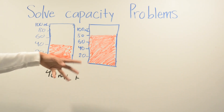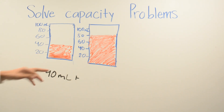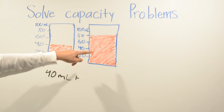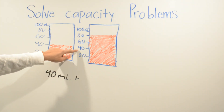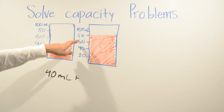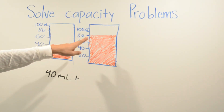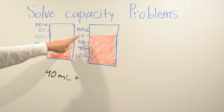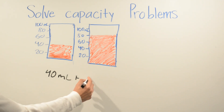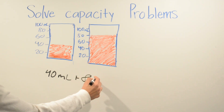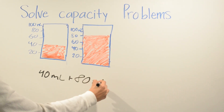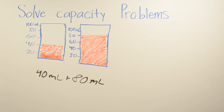Our second number that we have to find out. Is it 20? No, because it keeps on going. Is it 40? No. Is it 60? No. Is it 80? Yes, because it stops right there. So that's 80 milliliters.